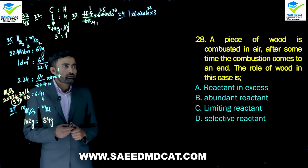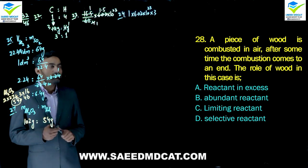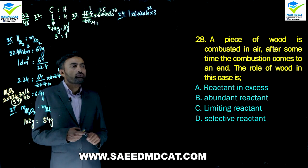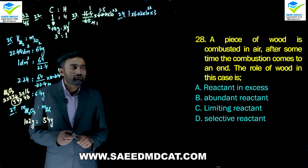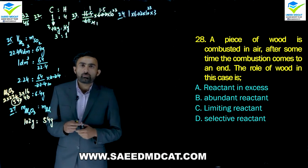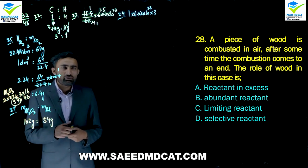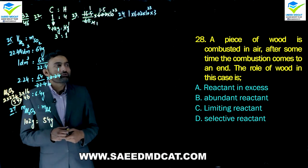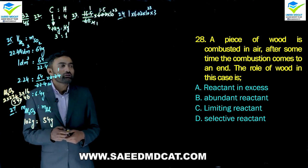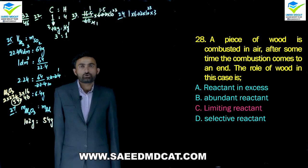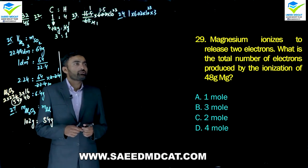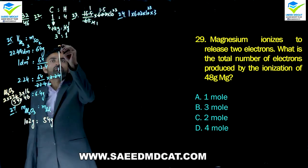Question 28: A piece of wood is combusted in air; after some time combustion ends. The combustion stops because the wood is consumed — not because air runs out. Wood is acting as the limiting reactant. Charlie option is correct.